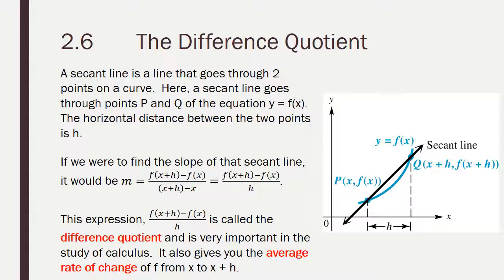Now we have something called the difference quotient. A secant line is a line that goes through two points on a curve. Here in this graph, we have a secant going through points p and q of the equation y equals f of x. y equals f of x is the blue curve. The horizontal distance between the two points is h. If we were to find the slope of the secant line, it would be f of x plus h, which is the y value for point q, minus f of x, which is the y value for point p, over x plus h, which is the x value for point q, minus x, which is the x value for point p.